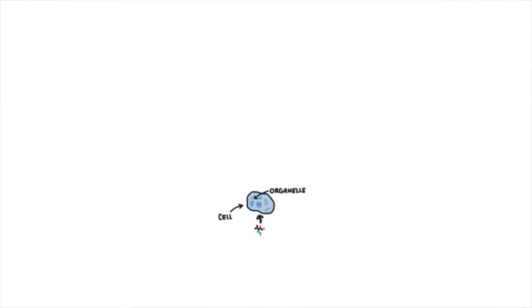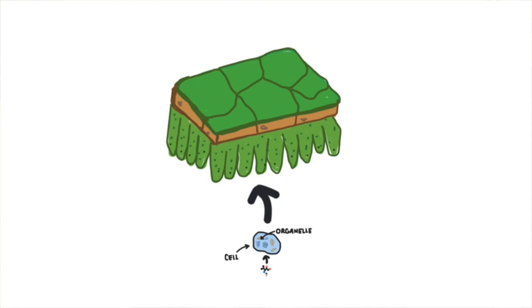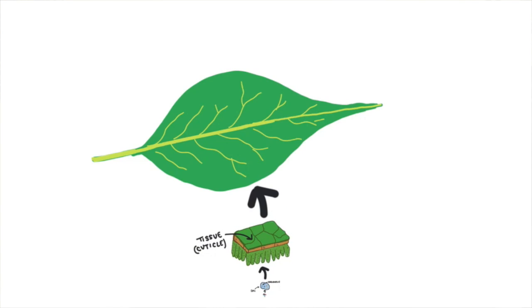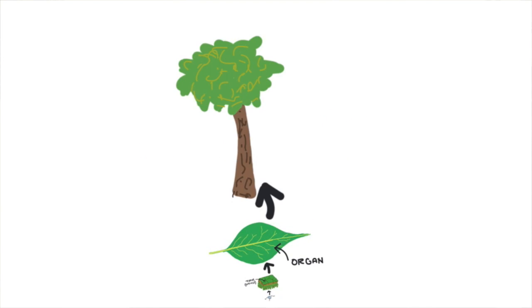And cells combine together to create more complex systems called tissues. Tissues like the waxy outer layer of this leaf, called the cuticle. Each tissue has a specific purpose that work together to form organs. This entire leaf is an organ, with many different tissues working together for a more specific purpose. Our body has organs as well, like our lungs and our kidney or stomach. Each organ plays an essential role, and they combine together to create organisms.